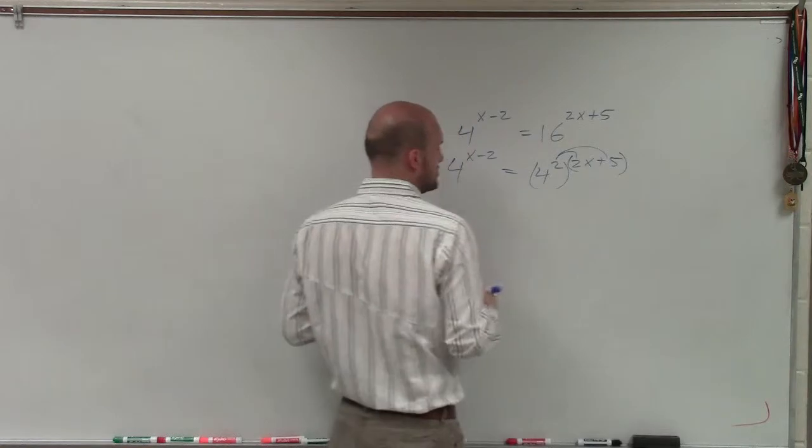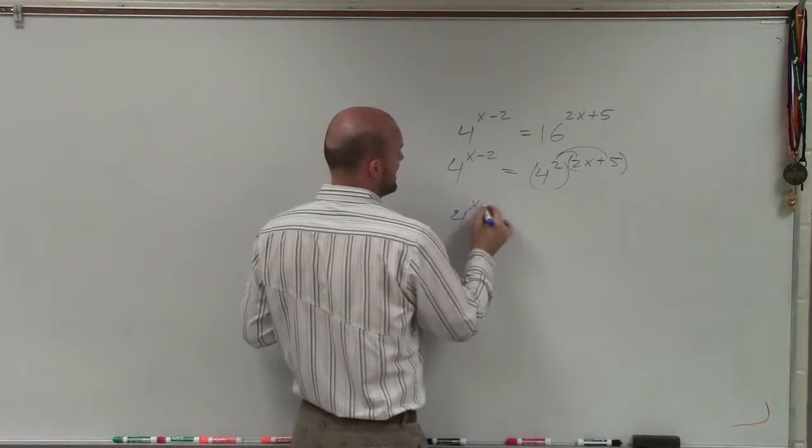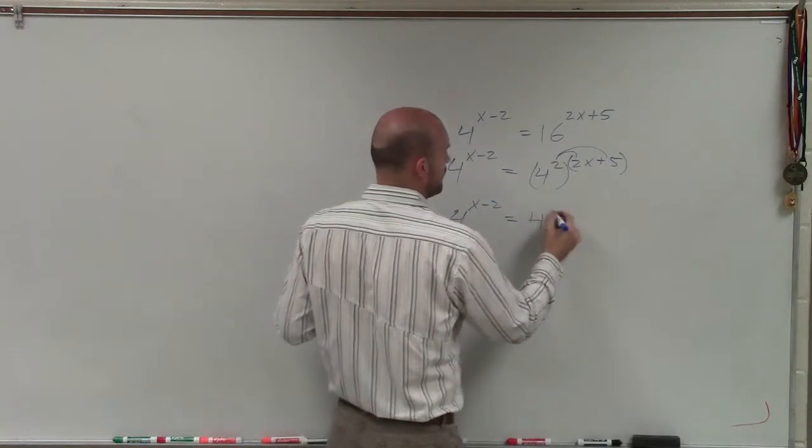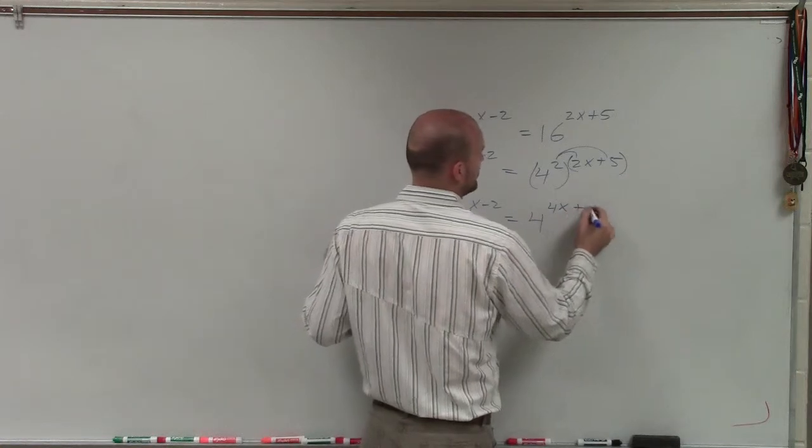Then again, remember we need to apply our distributive property. So I have 4 to the x minus 2 equals 4 to the 4x plus 10.